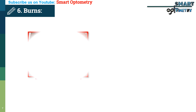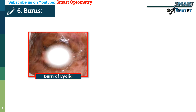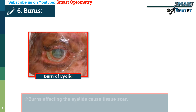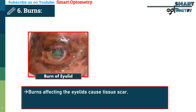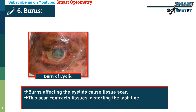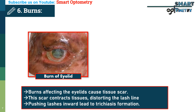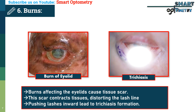6. Burns. Burns affecting the eyelids cause scar tissue to form. This scar contracts the tissues, distorting the lash line and pushing lashes inward, leading to trichiasis formation.